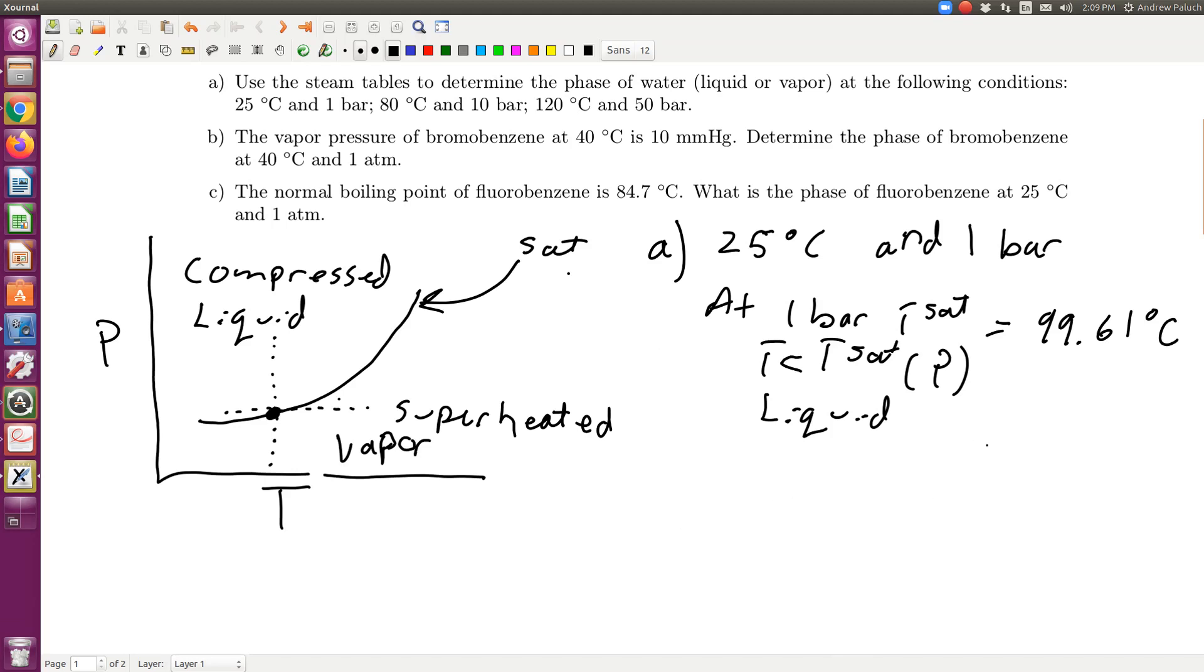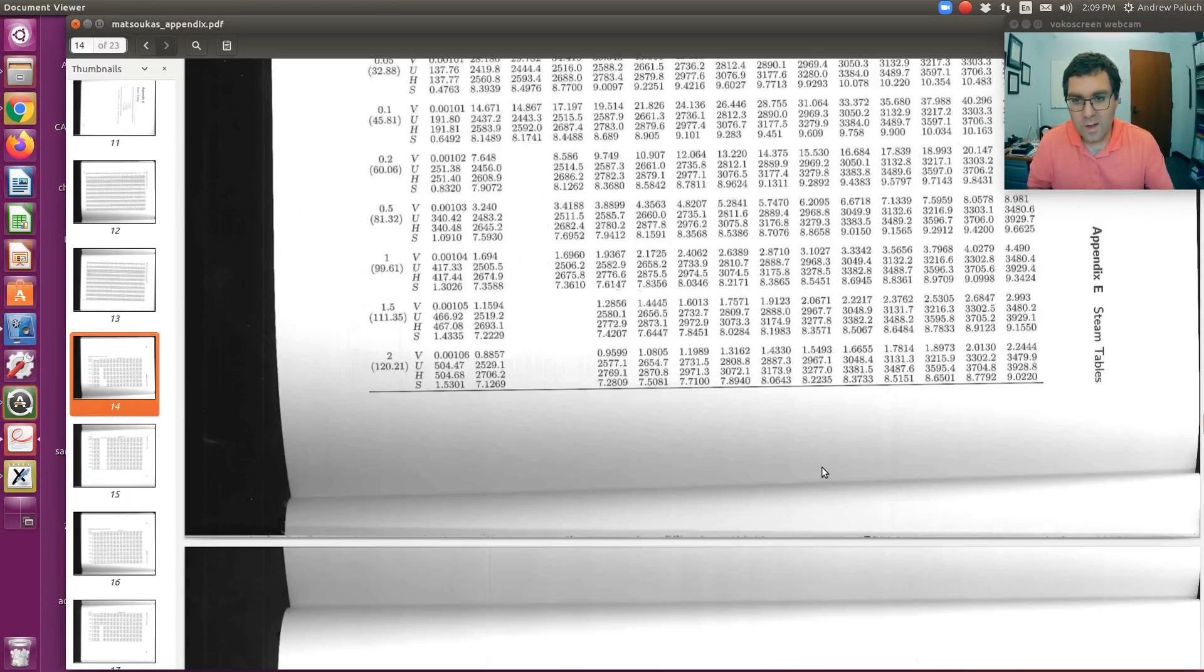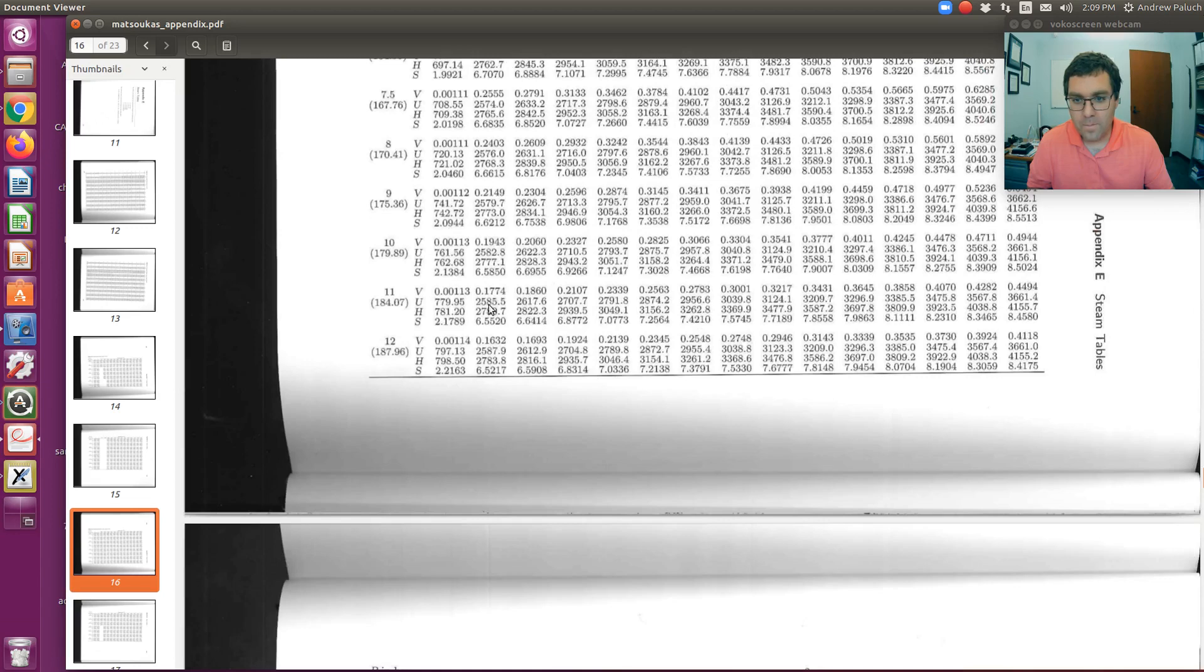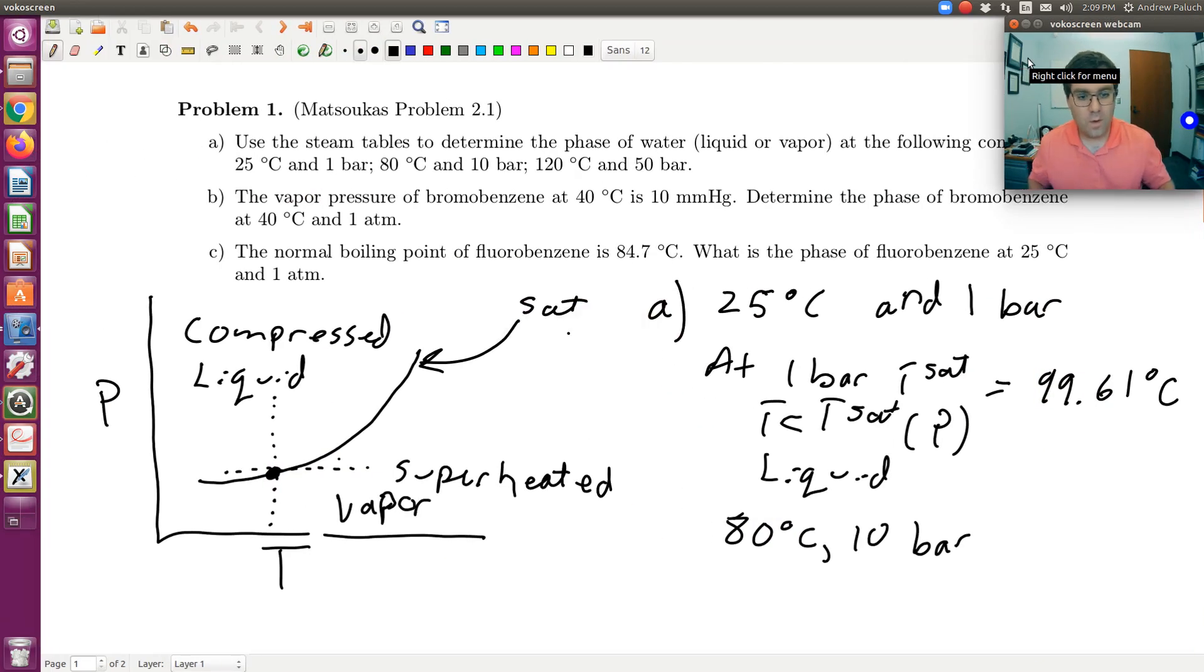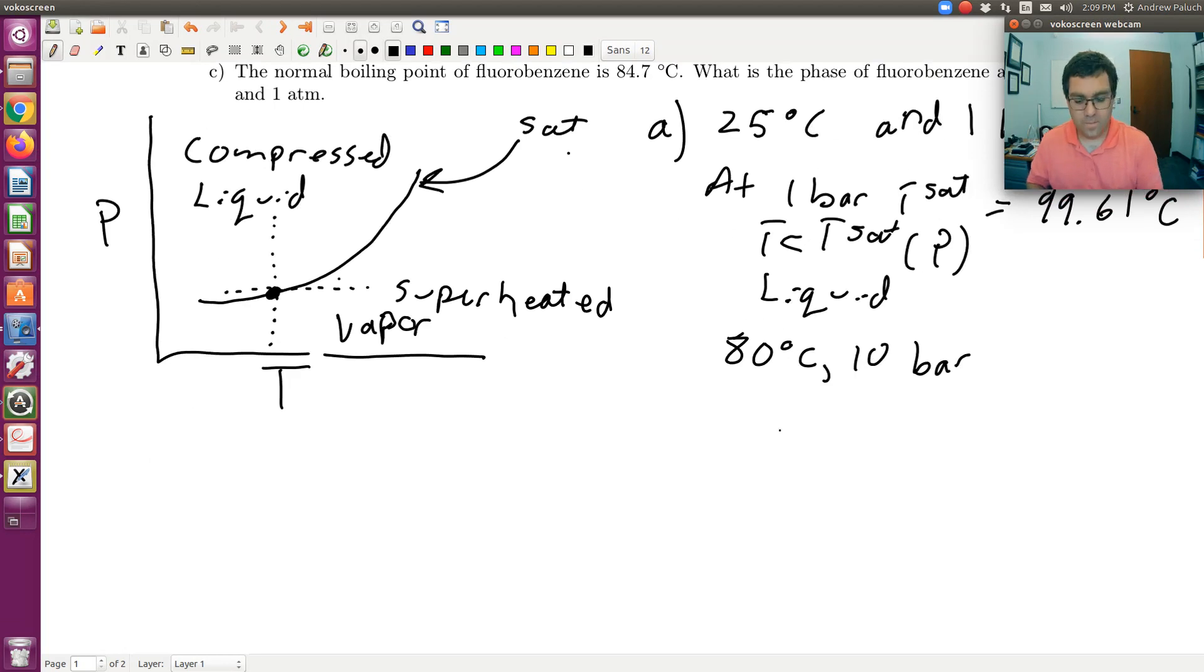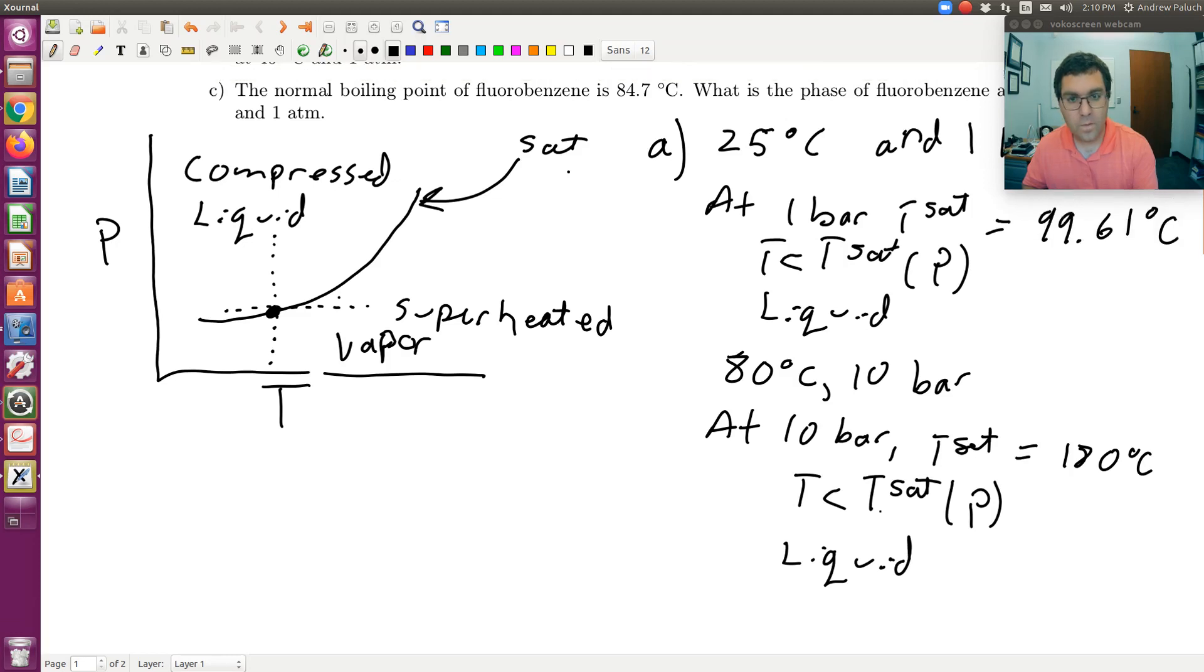Let's look at the next one. We have 80 degrees C and 10 bar. We could probably even stick at my superheated steam tables. At 10 bar, T_sat's going to be, let's just call it 180, 179.8. So at 10 bar, T_sat is essentially 180 degrees C. And so once again, since T is less than T_sat at P, I must have a liquid.